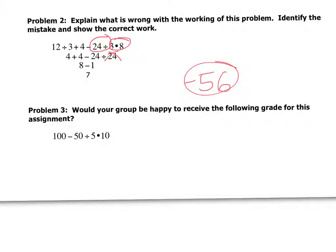All right, problem three. Would your group be happy to receive the following grade for this assignment? Let me work out two different problems here. Again, the golden rule. So if, hopefully none of you did this at this point in the game, but if you did five times 10 and got 50 first, instead of going left to right with multiplication and division, you'd get a pretty decent grade, right? 50 divided by 50 is one, so 100 minus one is 99. That'd be a pretty decent grade, except for the fact that that is wrong.